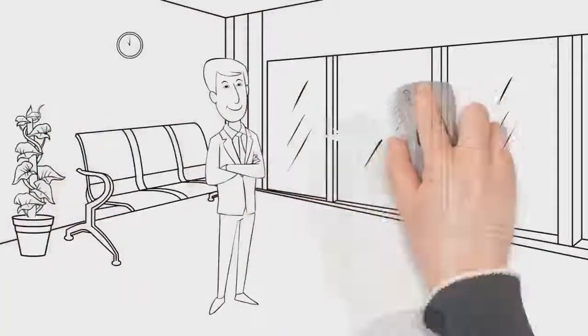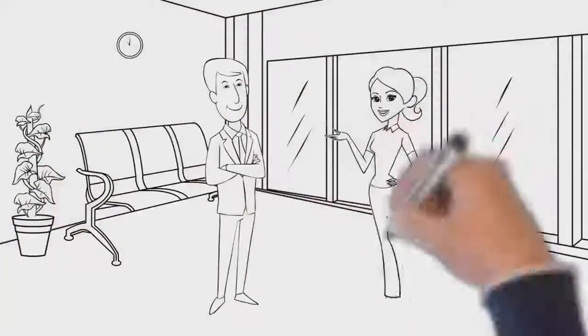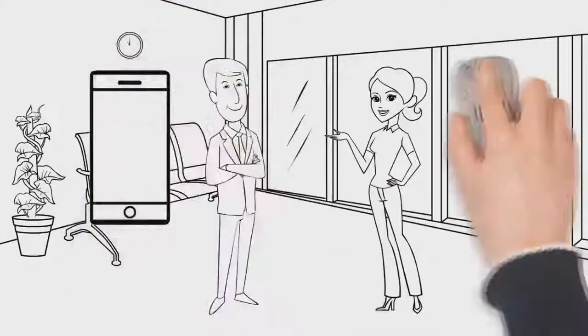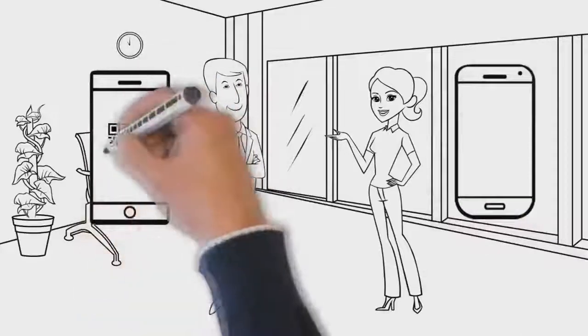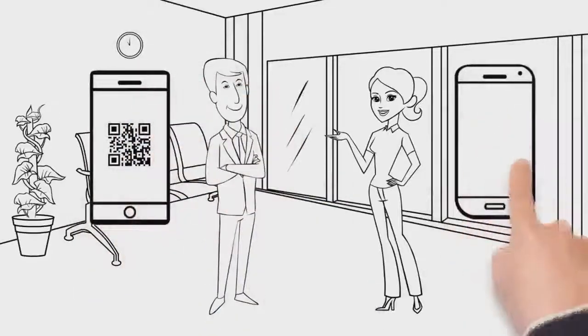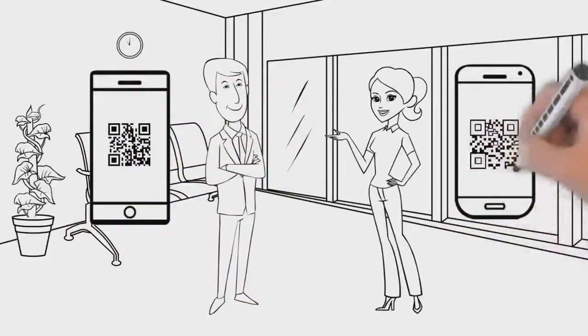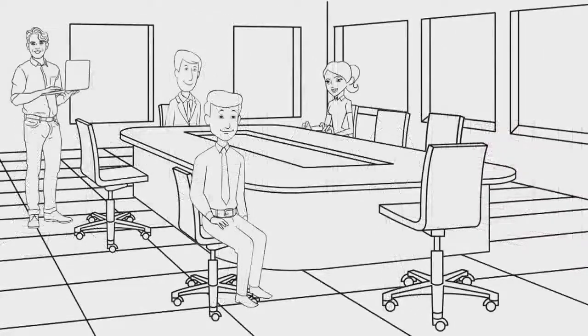John will scan his QR code and Michelle's QR code to capture their location details before entering the conference room. After all other staff have scanned their QR codes for the meeting room, they can proceed to the meeting.